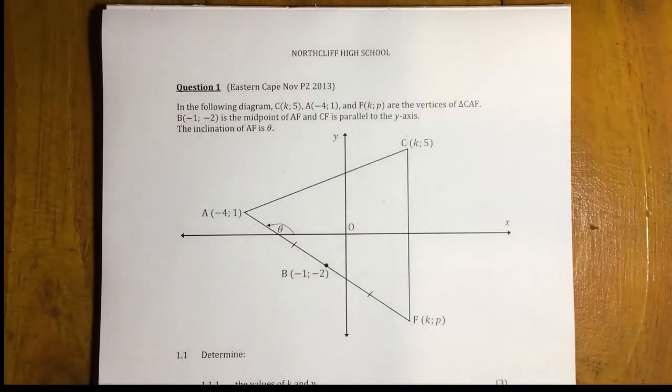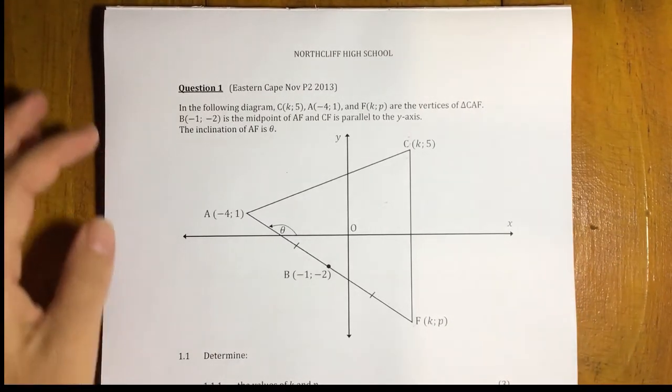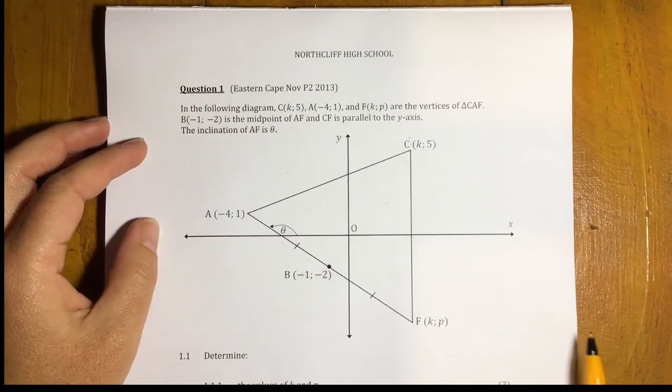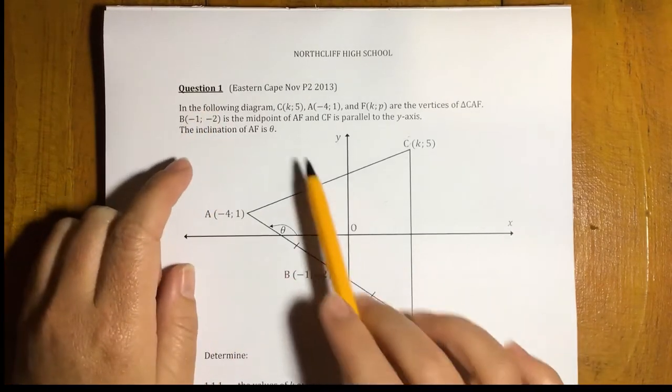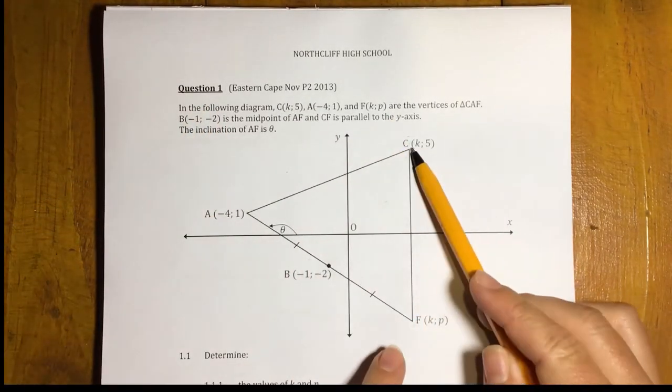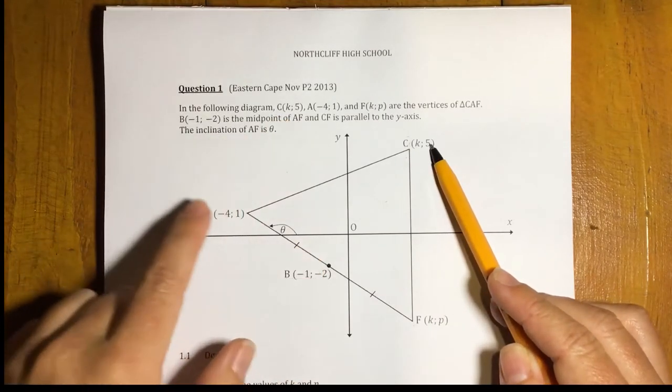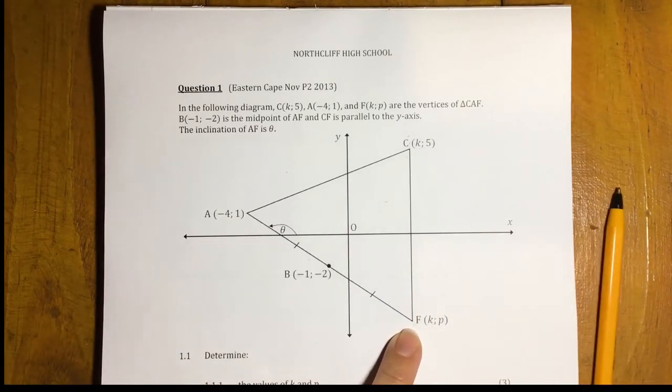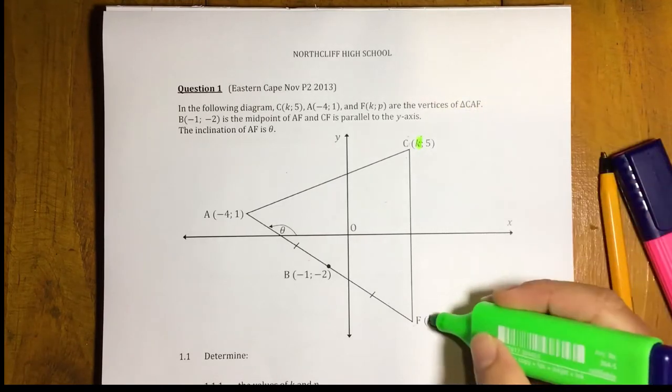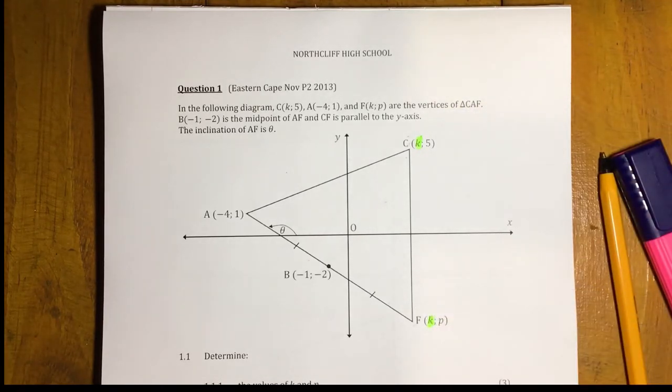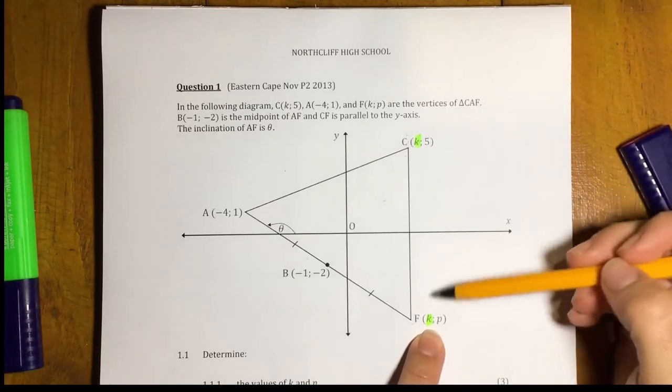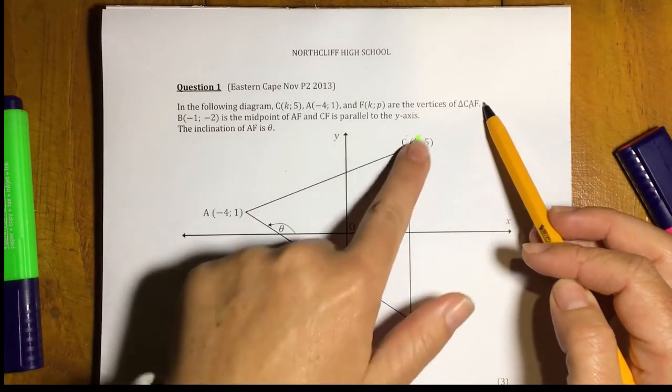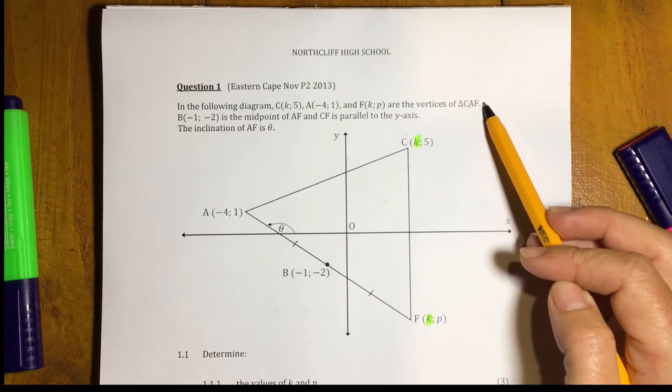Right, let's look at our first question. So, very important in any question, the most important part is to read the question and understand what it's talking about. So, in the following diagram, we have C, which has got a k and a 5, point A and point F. Now, hopefully you're already noticing that both coordinates, C and F, have a k variable in them, which means they have the same value for their x value. And then it says, are the vertices of triangle CAF, just to make sure that you know that those join to create a triangle.